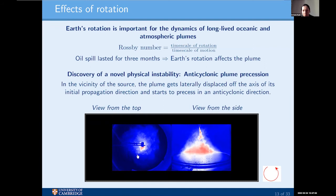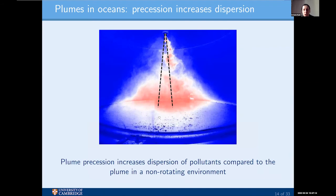We can study the pollutant distribution inside the water column in a rotating environment. Plume precession in the rotating environment dramatically changes the contaminant distribution compared to the non-rotating case. The black lines show the typical plume shapes expected in the non-rotating case, and you can see that in the rotating environment the lateral contaminant distribution is dramatically increased. This has very important consequences for how we apply mitigation measures and what we can do to reduce the spread of contaminants in the ocean.